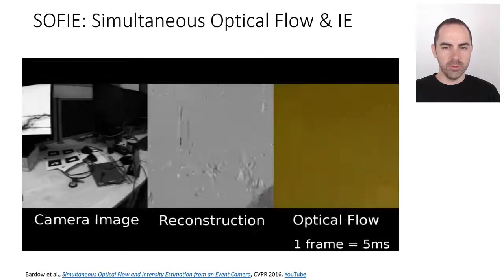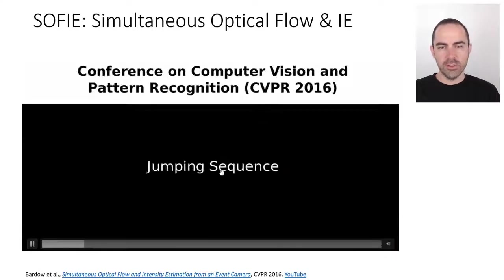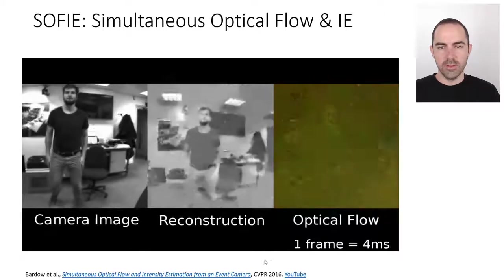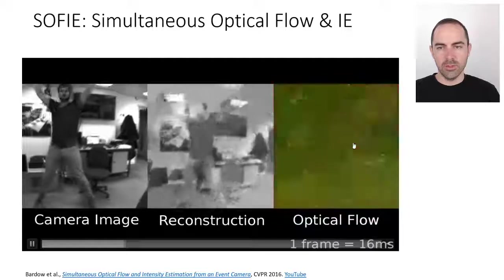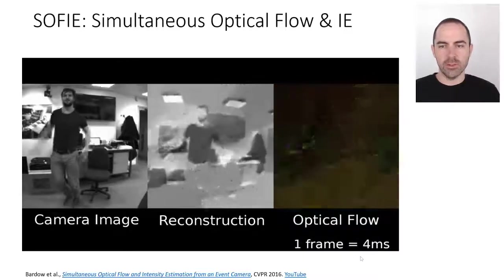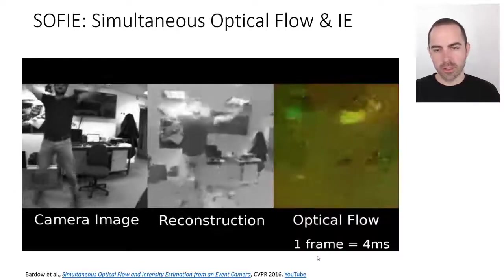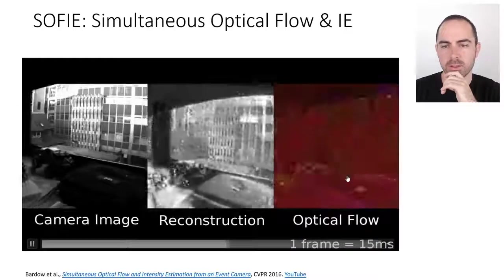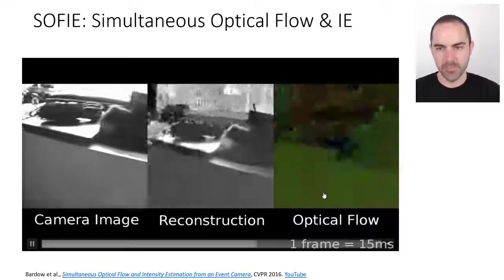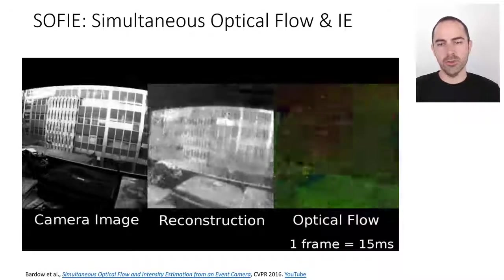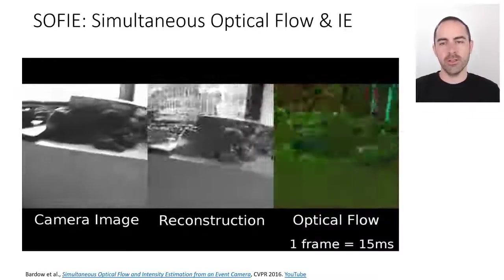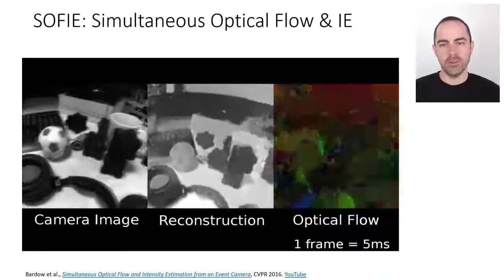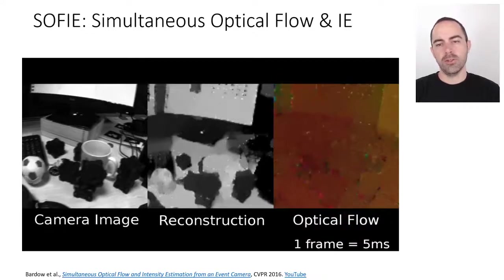A video shows the reconstructed intensity on the left and the optical flow on the right. The flow is more prominent in the arms than the rest of the scene; the camera is moving, which is why flow appears everywhere. This algorithm estimates dense optical flow — flow for every pixel, not just those with events — because the variational smoothness regularizers fill in regions without events by interpolating what the flow would be to be consistent with surrounding event regions.